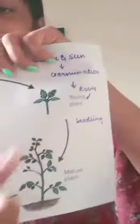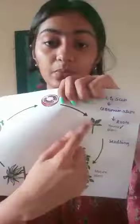For the plant to grow, the first thing it needs is sunlight, and then we add water to it. After that, germination happens — roots come out of the small seed, and then a small plant emerges. This is how the plant looks.